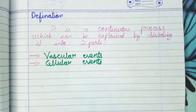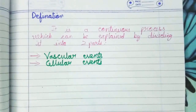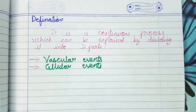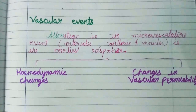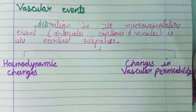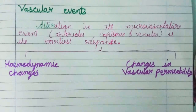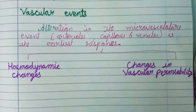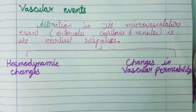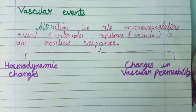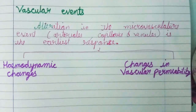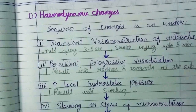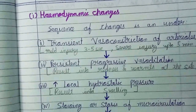Acute inflammation is a continuous process which can be explained by dividing it into two parts: vascular events and cellular events. Vascular events involve alteration in the microvascular system — arterioles, capillaries, and venules — and this is the earliest response to tissue injury. It can be studied under two types: hemodynamic changes and changes in vascular permeability.